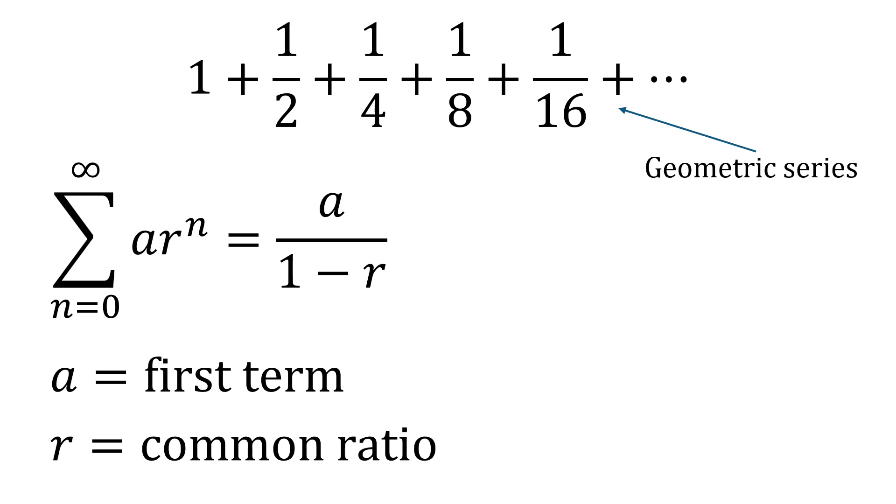And the sum of this is equal to a over one minus r. You can find out more about this in my video summing geometric series if you'd like to find out where this formula has come from.